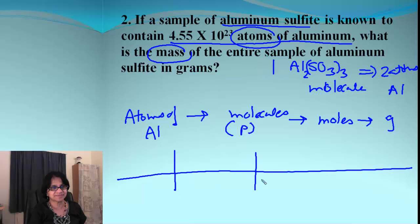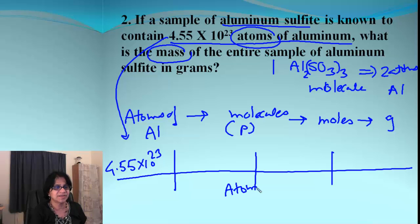So, what do we have here? This is 4.55 times 10 to the 23rd. That's what we have. The atoms divided by the atom. Now, here, it will be atom and here particles or molecule. So, keep in mind, one molecule is equal to two atoms of aluminum. So, I'm going to put two here and this is going to be one.